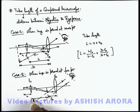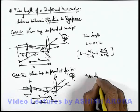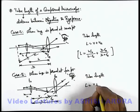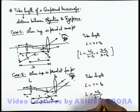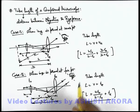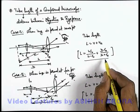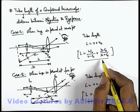In this situation, the tube length L — the separation between the objective and eyepiece lens — can be written as L = v + f_e. Substituting the value of v, the tube length is u·f_o / (u − f_o) + f_e. This is the tube length used when the final image is at the far point. To summarize: this is the tube length formula for a compound microscope when the final image is produced at the near point, and the other when it is at the far point.